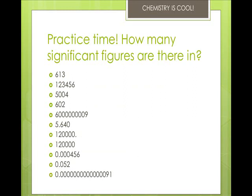Okay, now that you're back, the first one has three sig figs. 123456 has six. 5004 has four. 602 has three. 6000000009 has ten. 5.640 has four. 120000 with a decimal point has six, but 120000 without the decimal point has two. 0.000456 is three. 0.052 is two. And 0.00000000000091 is two. Okay, we will come back and practice some more in just a moment.